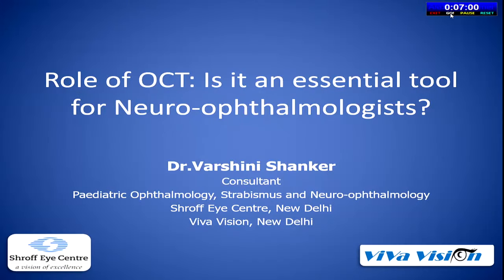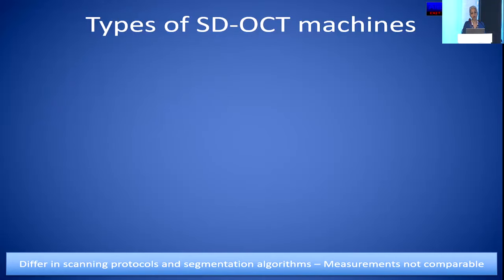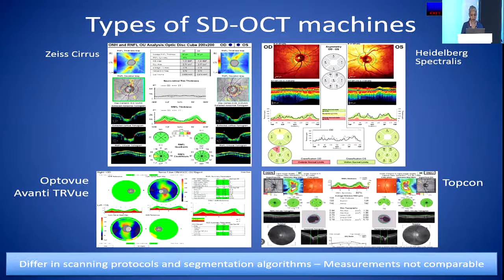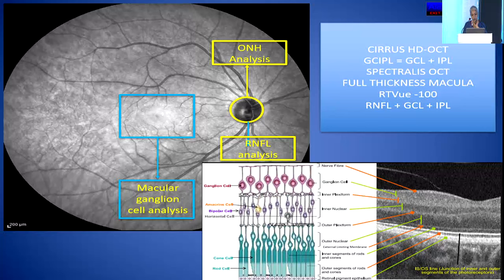Good afternoon everybody. Thank you for inviting me. I'm going to be presenting about OCT and whether it is essential for neuro-ophthalmologists. Looking at the types of OCTs we get, these four different machines have four different printouts. However, they differ in scanning protocols and segmentation algorithms, and measurements are not comparable between one and another.